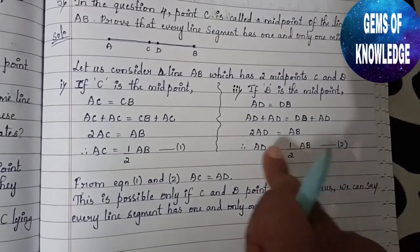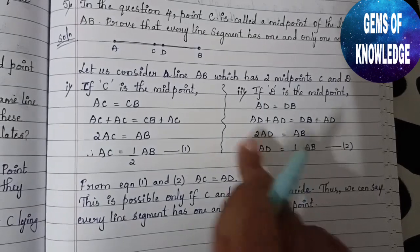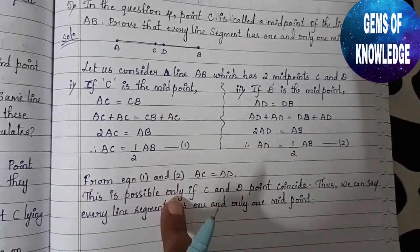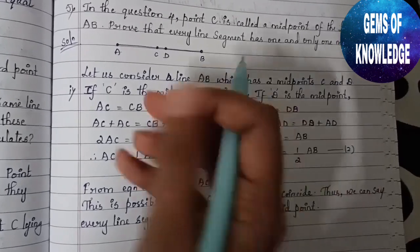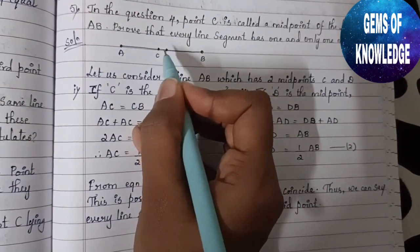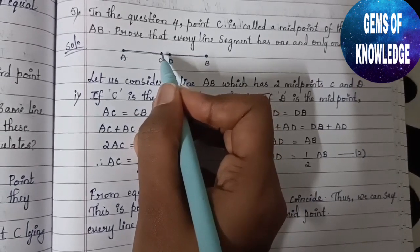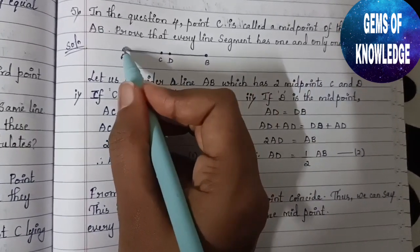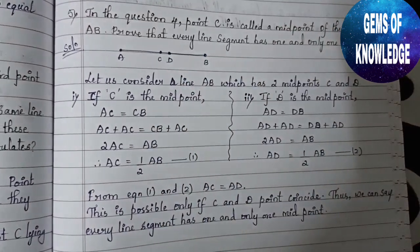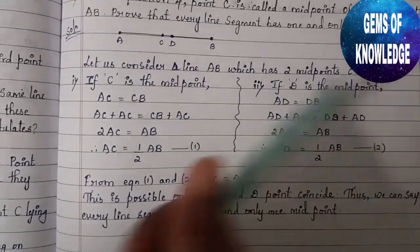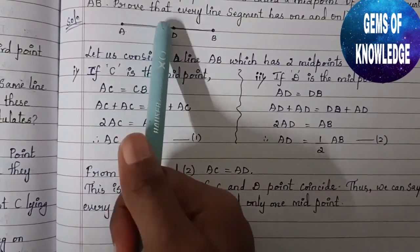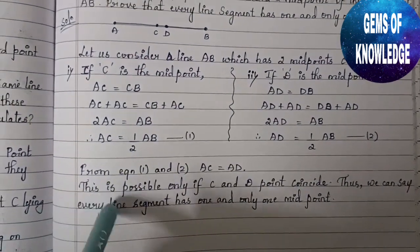From equations one and two, AC equals half of AB and AD equals half of AB, so AC equals AD. This is only possible if points C and D coincide — that is, if C and D are the same point. Thus, every line segment has one and only one midpoint.